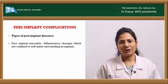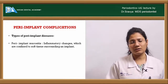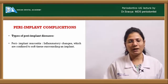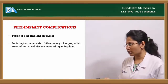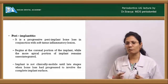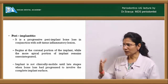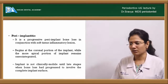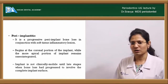Complications can arise with implants in the form of peri-implant diseases. There are two types: peri-implant mucositis and peri-implantitis. Peri-implant mucositis involves inflammatory changes confined to the surrounding soft tissues without any radiographic evidence of bone loss. Peri-implantitis involves progressive peri-implant bone loss in conjunction with inflammatory changes in the soft tissues. It begins at the coronal portion of the implant while the more apical portion remains osseointegrated, and an angular pattern of bone loss is typically noticed radiographically.